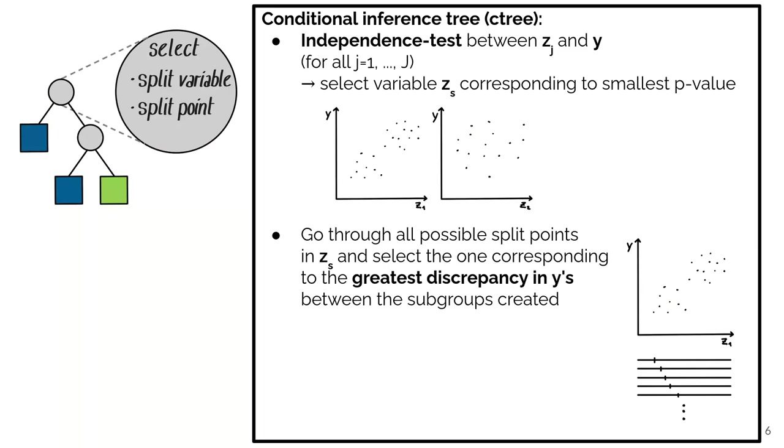And we do an independence test between these split variables and our outcome variable, which would in the example be whether the party is valuable to go to or not. Or it could also be other things. So we go through all these split variables and the outcome and do independence tests.